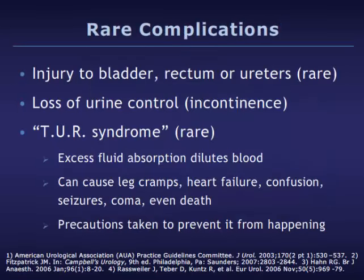Less common complications that can occur during the operation include injury to the bladder, rectum, or ureters — the tubes that drain urine from the kidneys — and so-called transurethral resection, or TUR, syndrome. This very rare complication is caused by excess fluid absorption into the body during surgery, which can cause dilution of blood, leading to heart failure, confusion, seizures, coma, and even death. TUR syndrome has become a very rare complication because special measures are taken to prevent it.